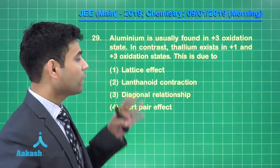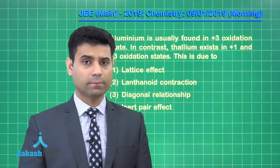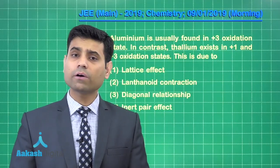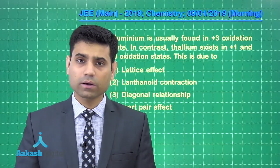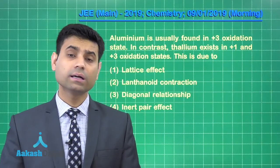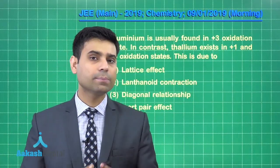So, for example, if we have 13th group element, in 13th group element, the stability of +3 oxidation state decreases down the group while that of +1 oxidation state increases down the group. That is because of inert pair effect.